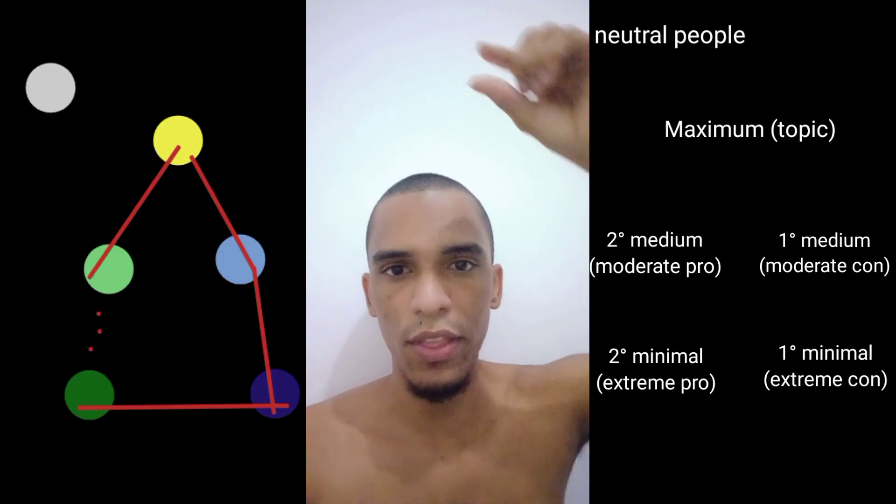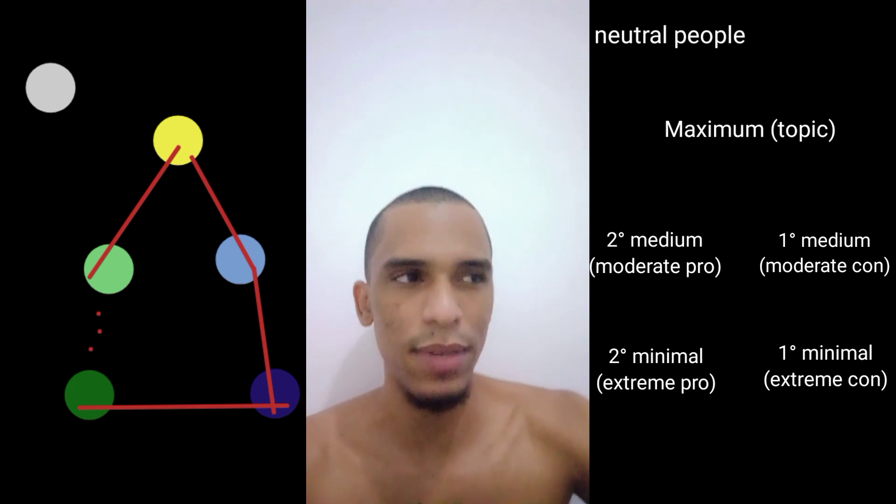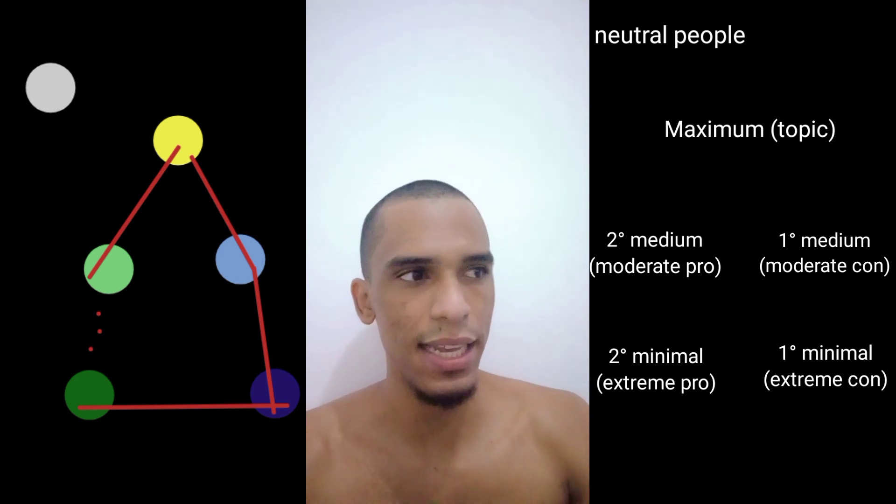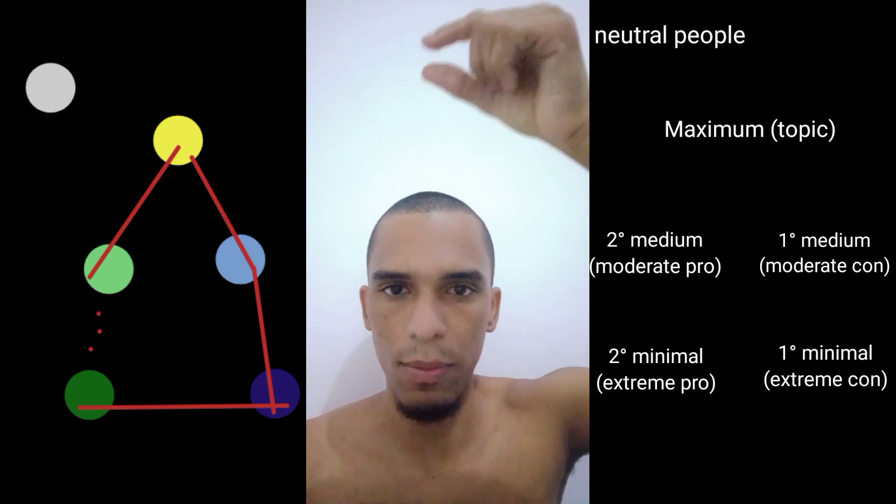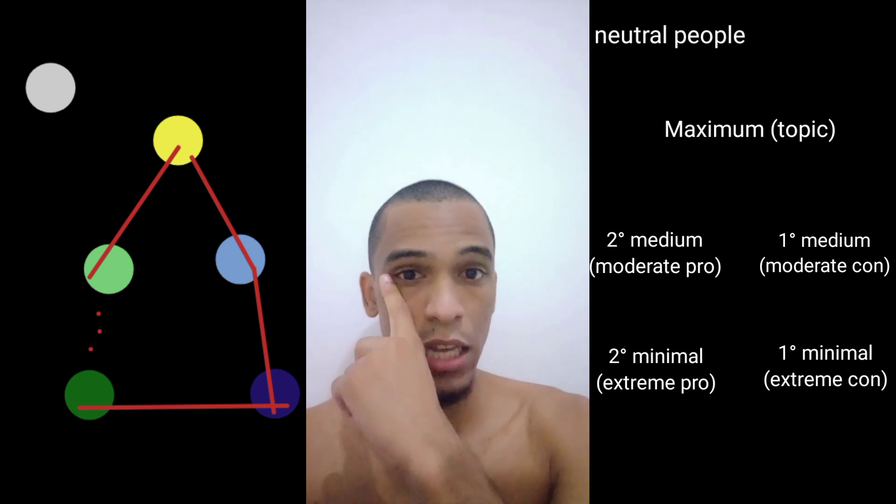First, we have the maximum top, a maximum point. This maximum point can be any subject, any topic you can think of, like Harry Potter, black people, terrorism, governments, politics, games, interests, faith, everything you want. The maximum point can be any subject, any topic.